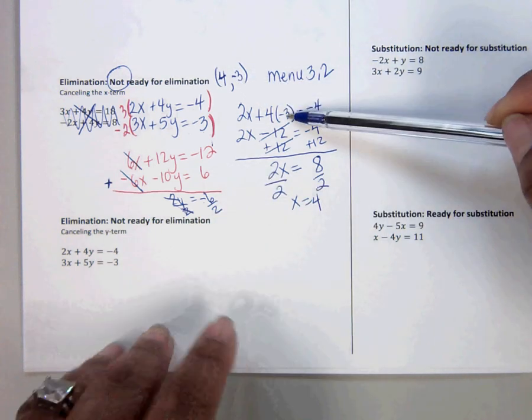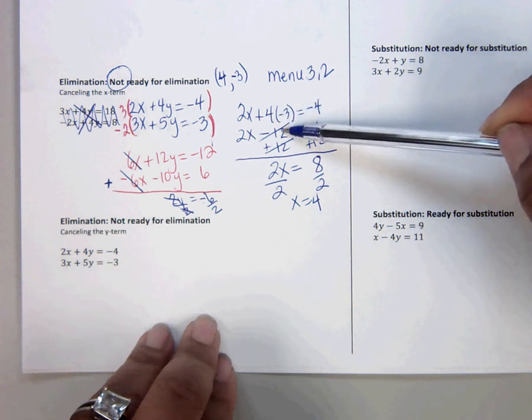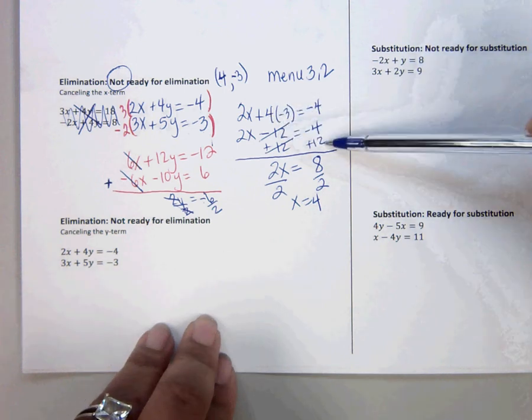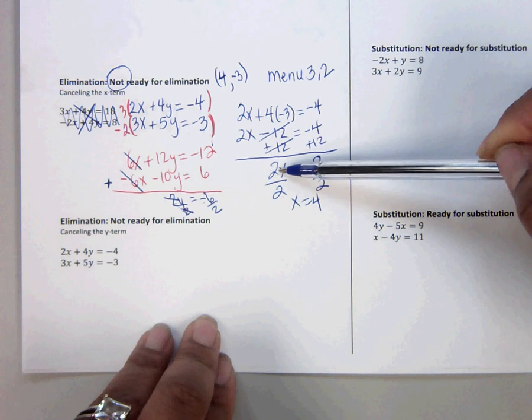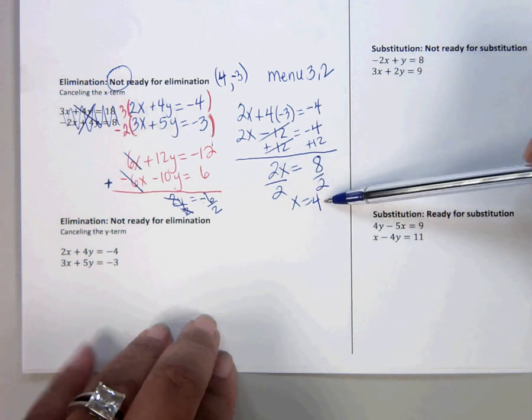We have y is negative 3. Plug negative 3 in the y spot. Multiply and get minus 12. Add 12. Add 12. You get 8. Divide by 2. X is 4. Let's try the next one.